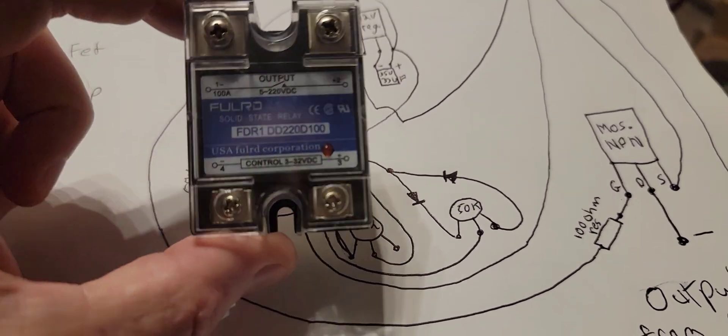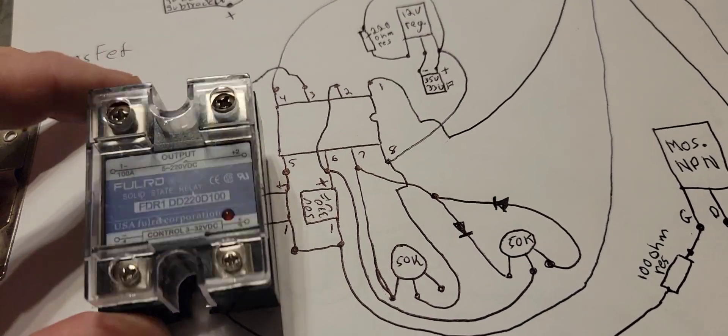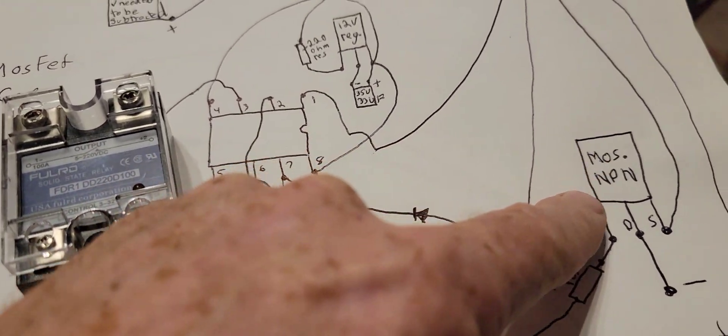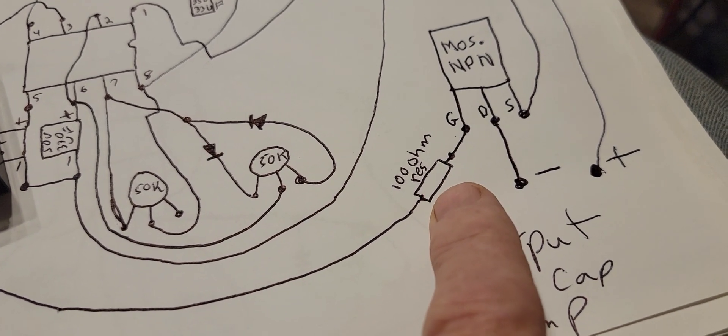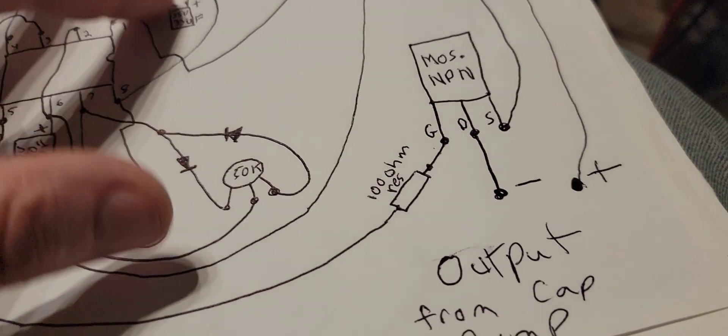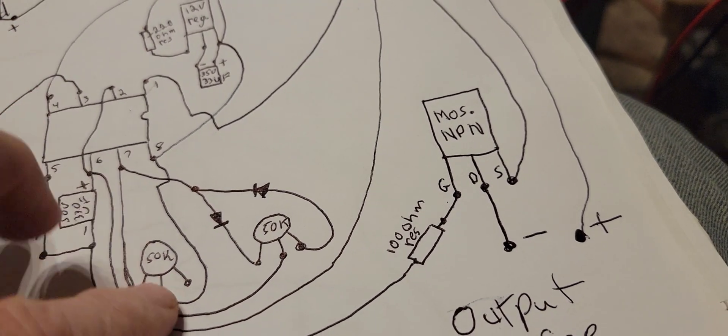I just wanted to say you can use an SSR with this circuit. These work just fine instead of having your MOSFET here. You don't even need this resistor for your voltage is coming out. That's all you'll need.